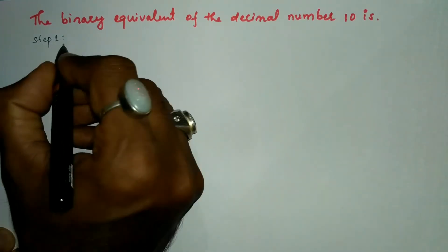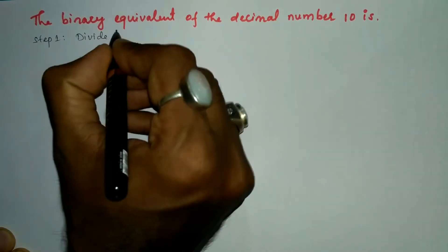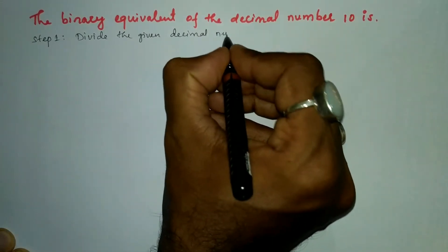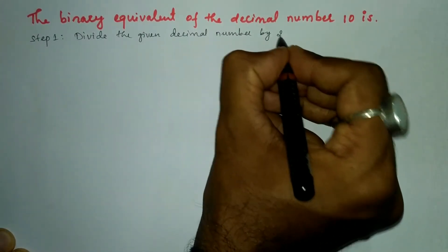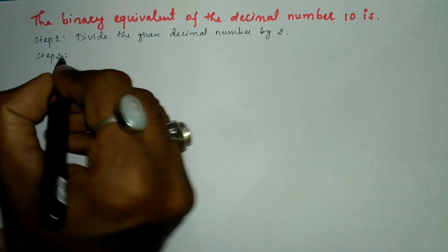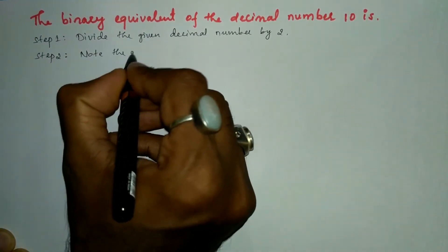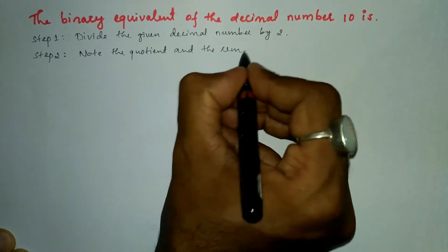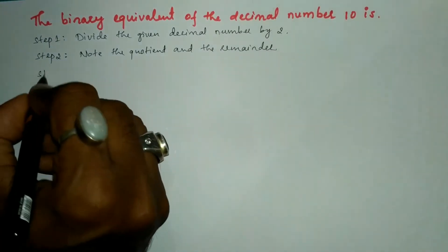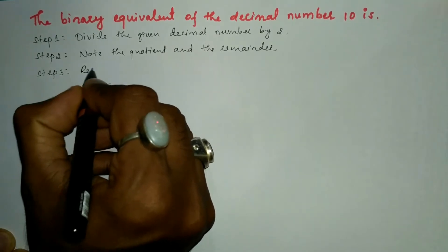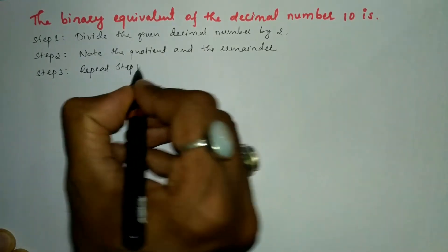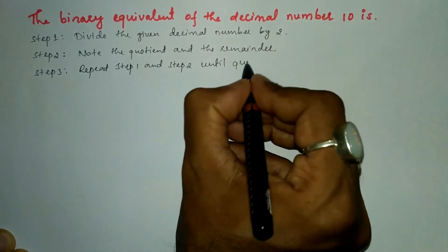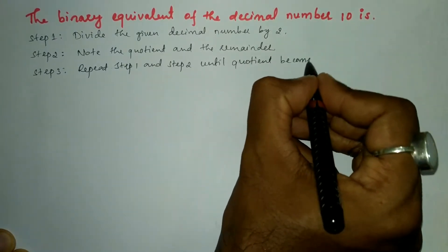The procedure consists of a number of steps. Step one: divide the given decimal number by two. Step two: note the quotient and the remainder. Step three: repeat step one and step two until the quotient becomes zero.